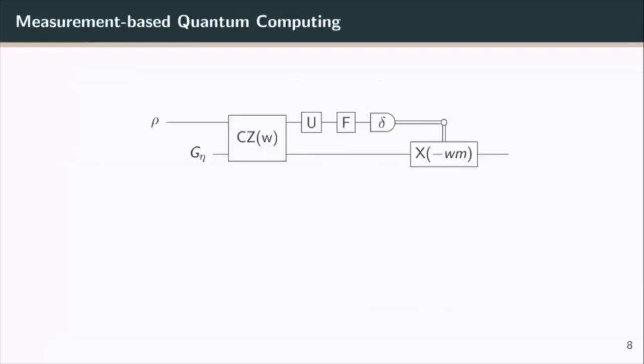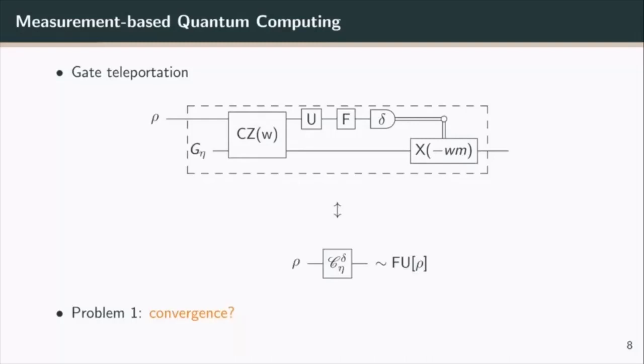Measurement based quantum computing is very similar in CV to the qubit case. It all comes down essentially to the gate teleportation protocol. For those who are not familiar with the idea of gate teleportation, the idea is to entangle an input system here rho with an auxiliary system eta using this controlled Z gate. Then you can show that by performing a measurement on this input system in a basis which depends on the unitary U, the output state of this circuit up to a correction depending on the result of the measurement corresponds to a quantum channel which implements basically the circuit of just applying the unitary that I wanted on rho.